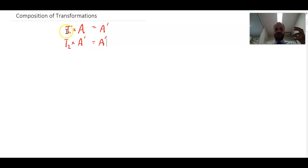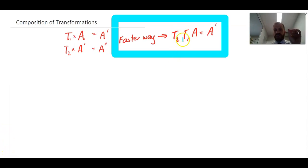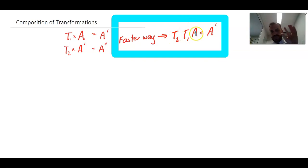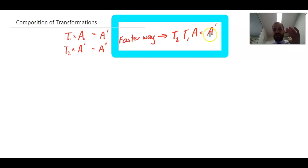That would be one way to do it, but we can squeeze it into a single equation. The faster way is: second transformation times first transformation times the object equals our image — the image after both transformations.